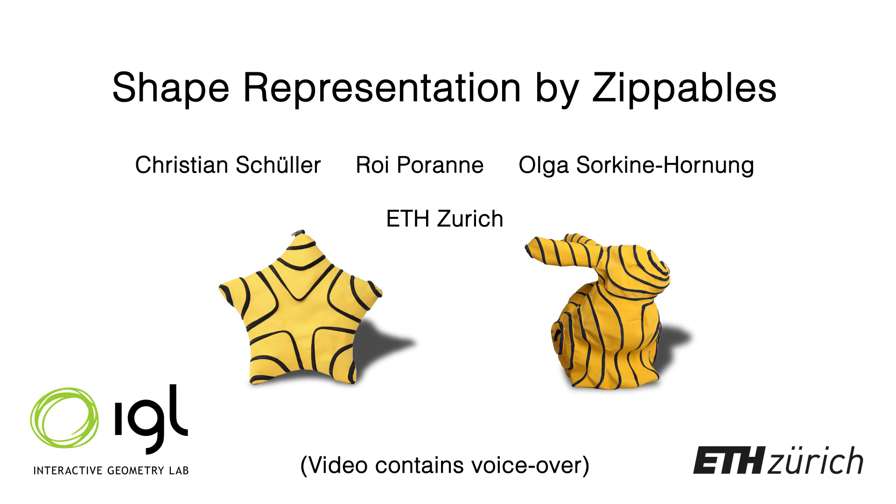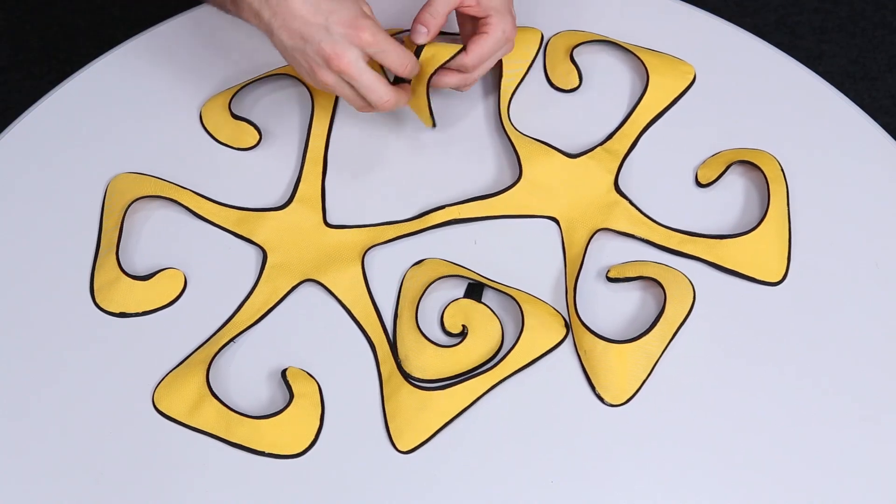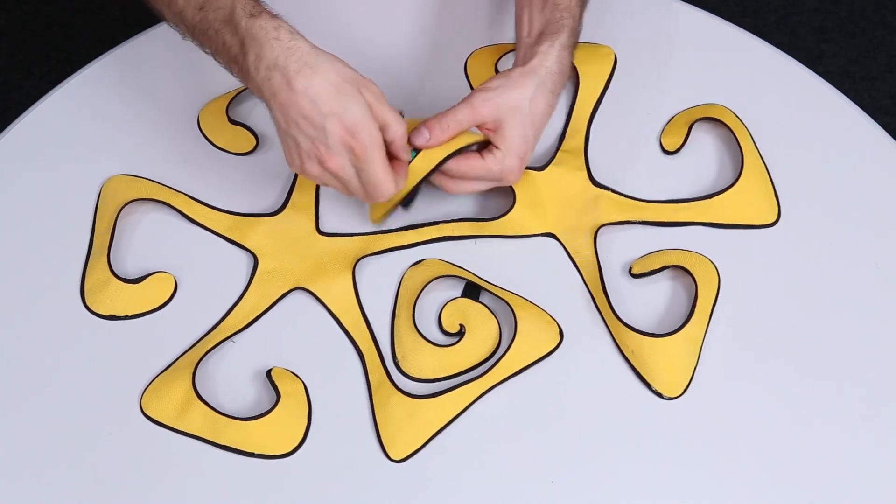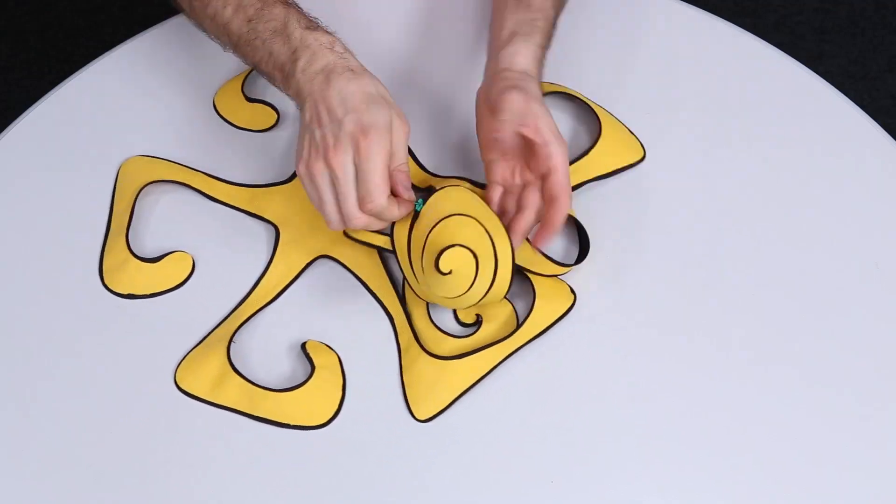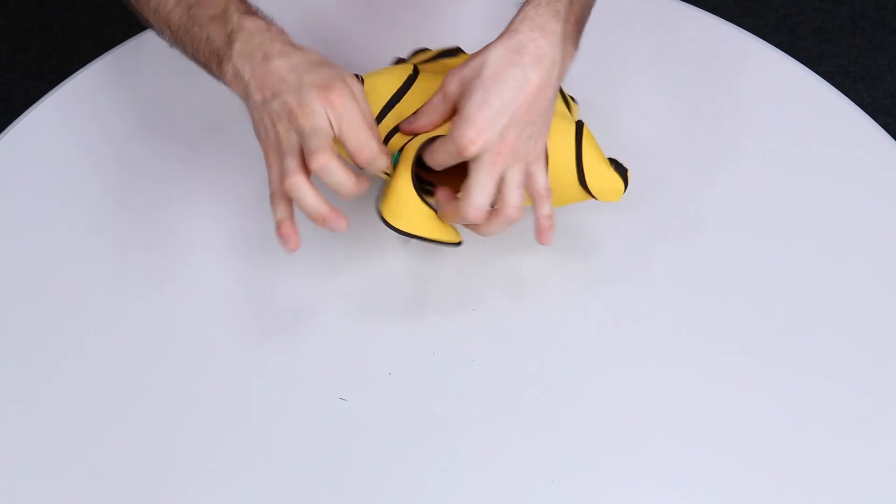We present a computational approach for designing zippables. Zippables are objects made from a flat piece of fabric with a single zipper band attached around its boundary. Zipping them up creates surprising 3D shapes.